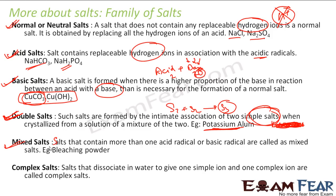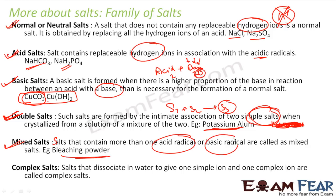A mixed salt is a salt that contains more than one acid radical or basic radical. Bleaching powder is one example of a mixed salt.